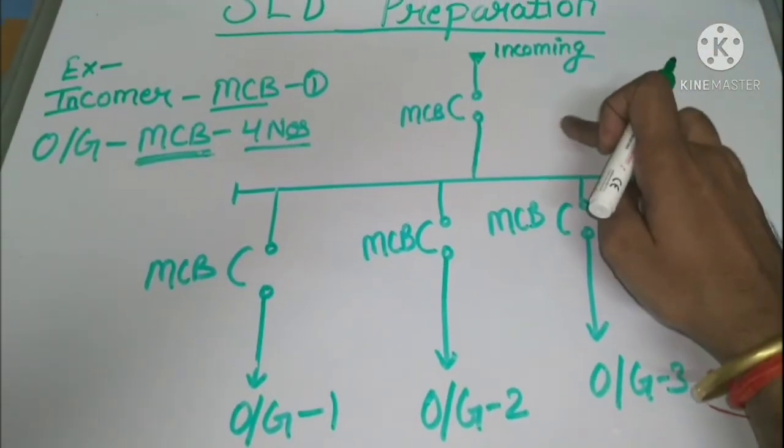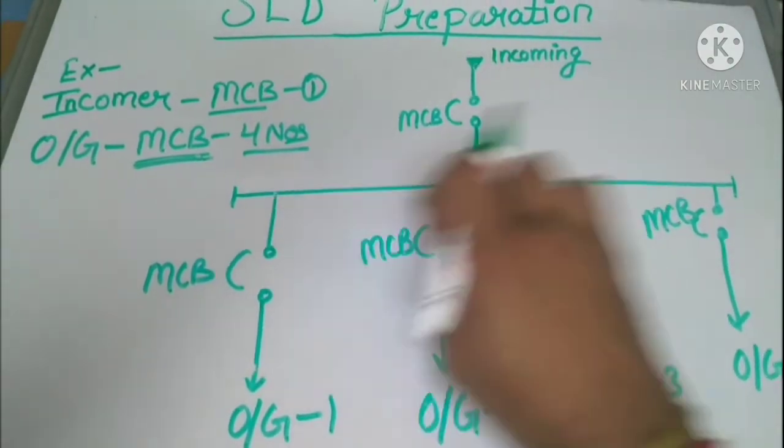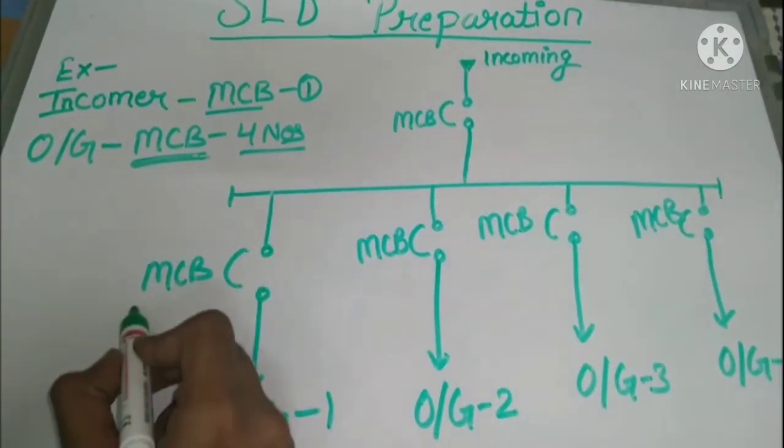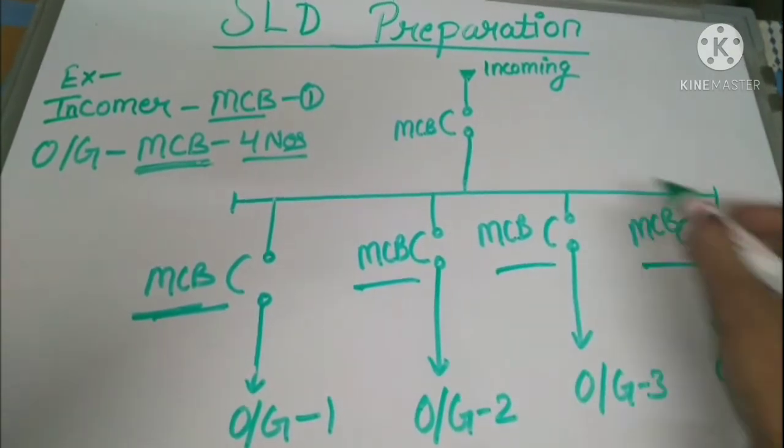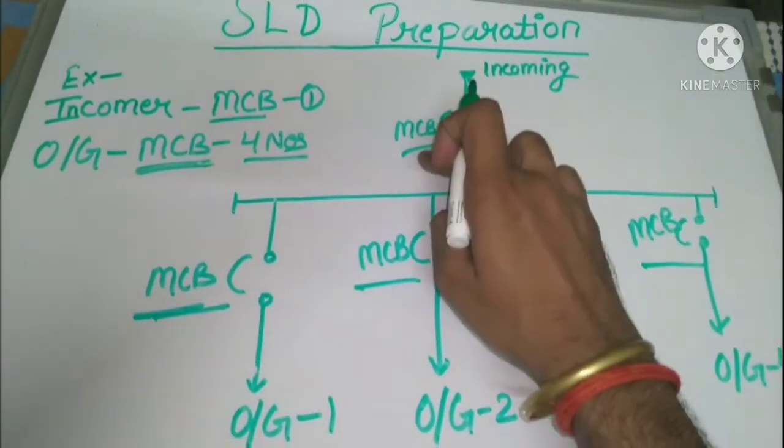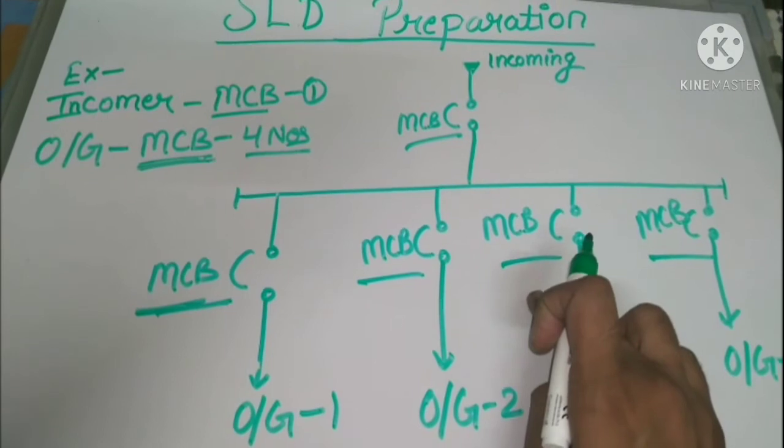So SLD is the single line diagram that uses lines and graphical symbols. We are using symbol here for MCB. This is the symbol of MCB. We are using the symbol of MCB like this. So this is the graphical symbol.